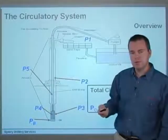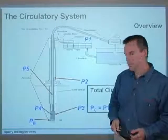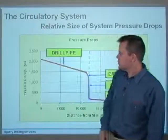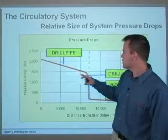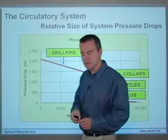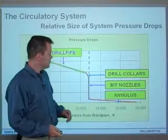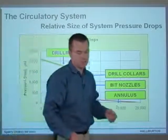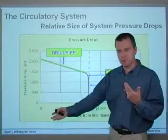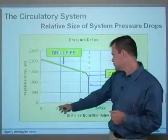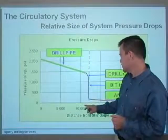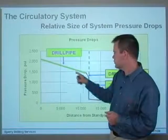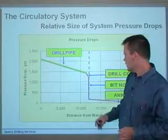Let's look at the sizes of these different pressure drops on a graph. If we had a total standpipe pressure of just over 2,000 psi, what would be the relative sizes of these pressure drops? The first one to look at is the drill pipe — it's somewhere in the region of 700 psi. This really depends on the length and the depth of the wellbore. We've got about just over 10,000 feet of drill pipe, giving us 700 to 800 psi through it, which is quite a significant pressure drop for such a long piece of pipe.